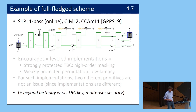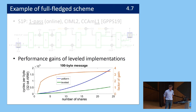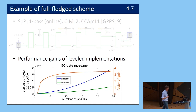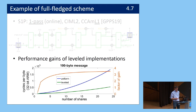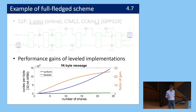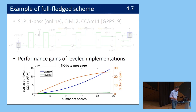What do we gain? The performance advantage is significant. The blue curve shows cost for a uniform implementation where everything is masked at the same level (e.g., CBC). The green curve shows cycles per byte for our leveled implementation for a 100-byte message — for example, with 8 shares we already gain a factor of 3.5. For a 1-kilobyte message the gain increases greatly, reaching a factor of 24–25 for larger share counts. We concretely gain a lot with this type of leveled implementation.